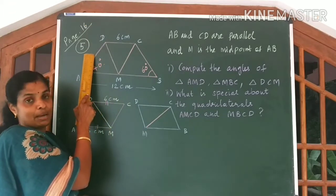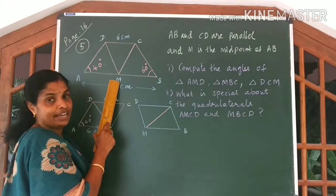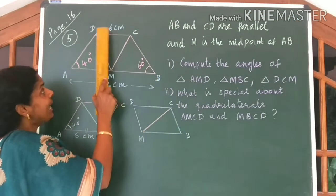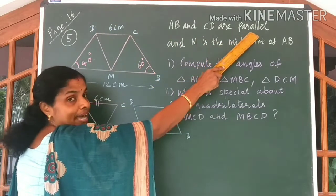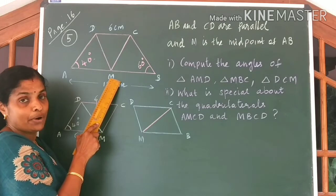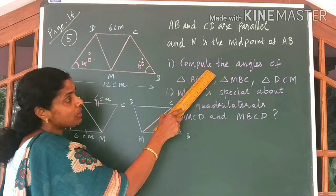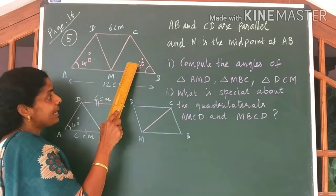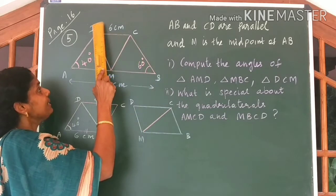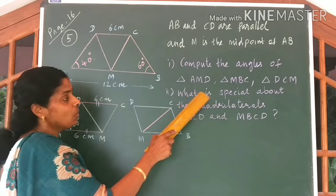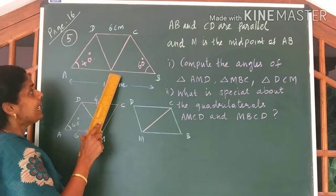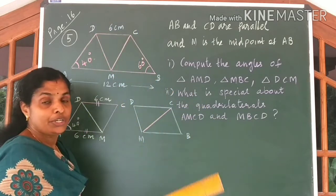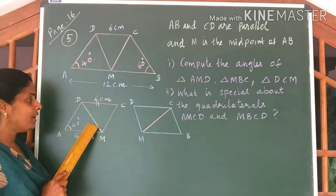Page number 16, question number 5. I have drawn the figure and written the question on the board. AB and CD are given to be parallel, and M is given to be the midpoint. You are asked to compute the angles of the first triangle AMD, second triangle MBC, and the third triangle DCM. The second part of the question asks what is special about the quadrilateral AMCD and also MBCD. For you to understand clearly, I have drawn them separately.